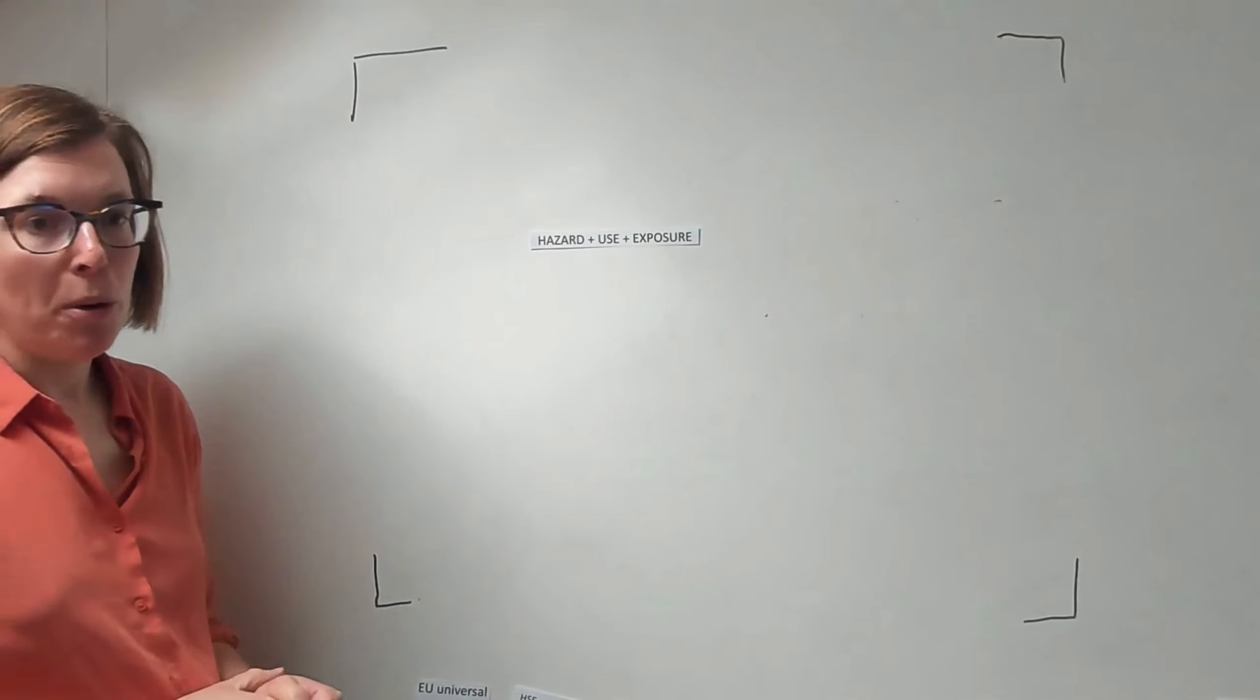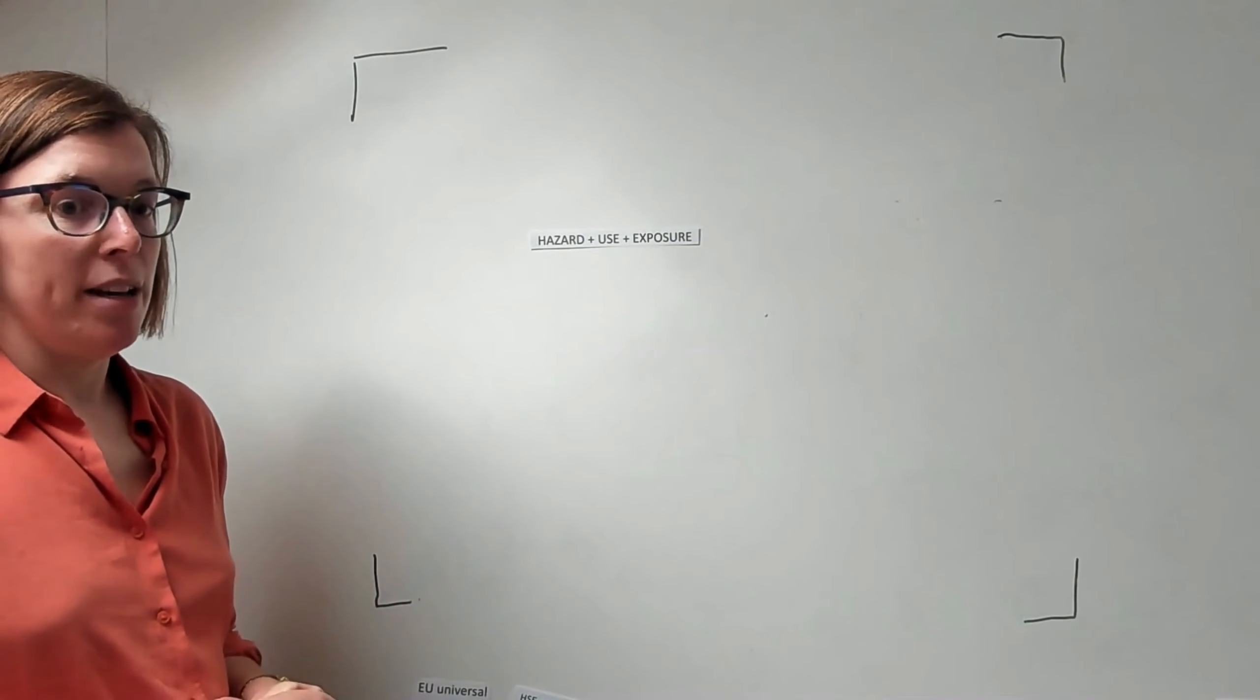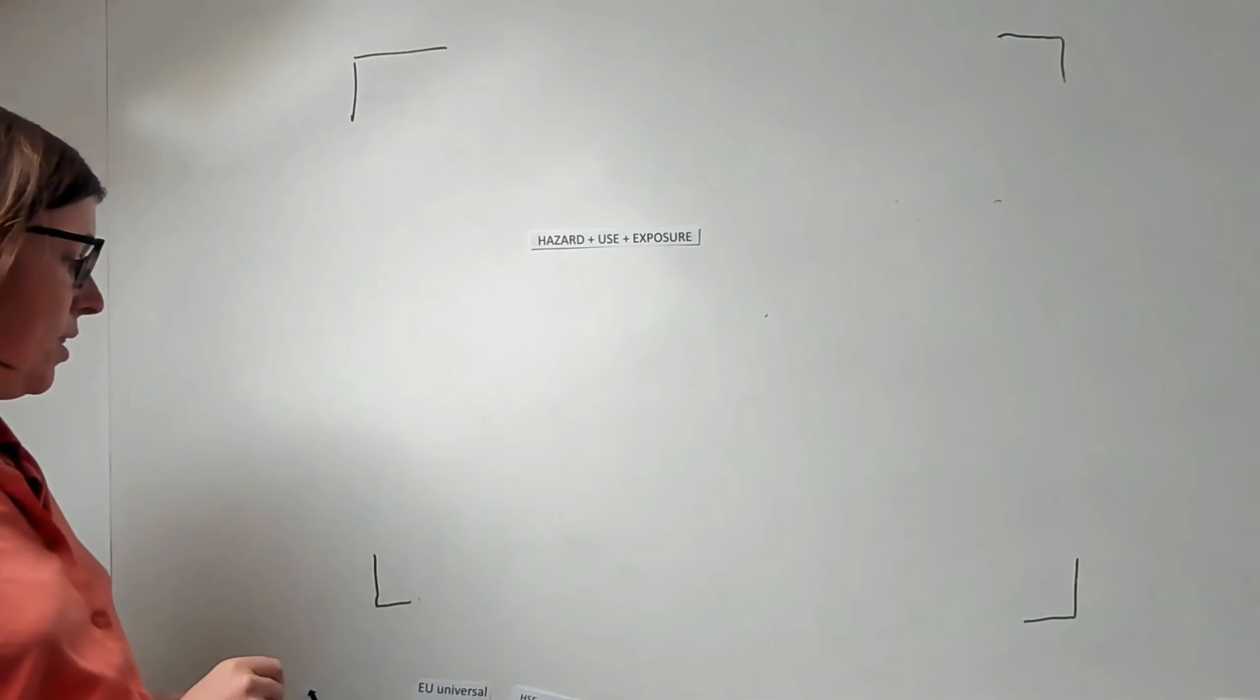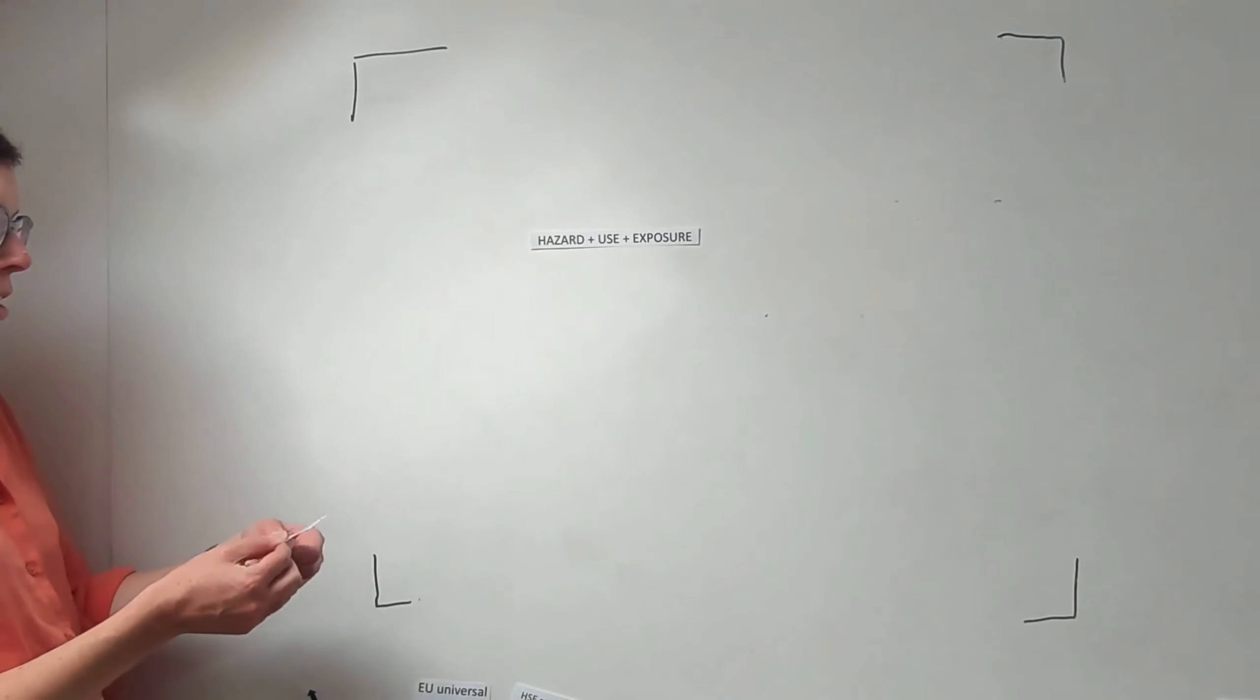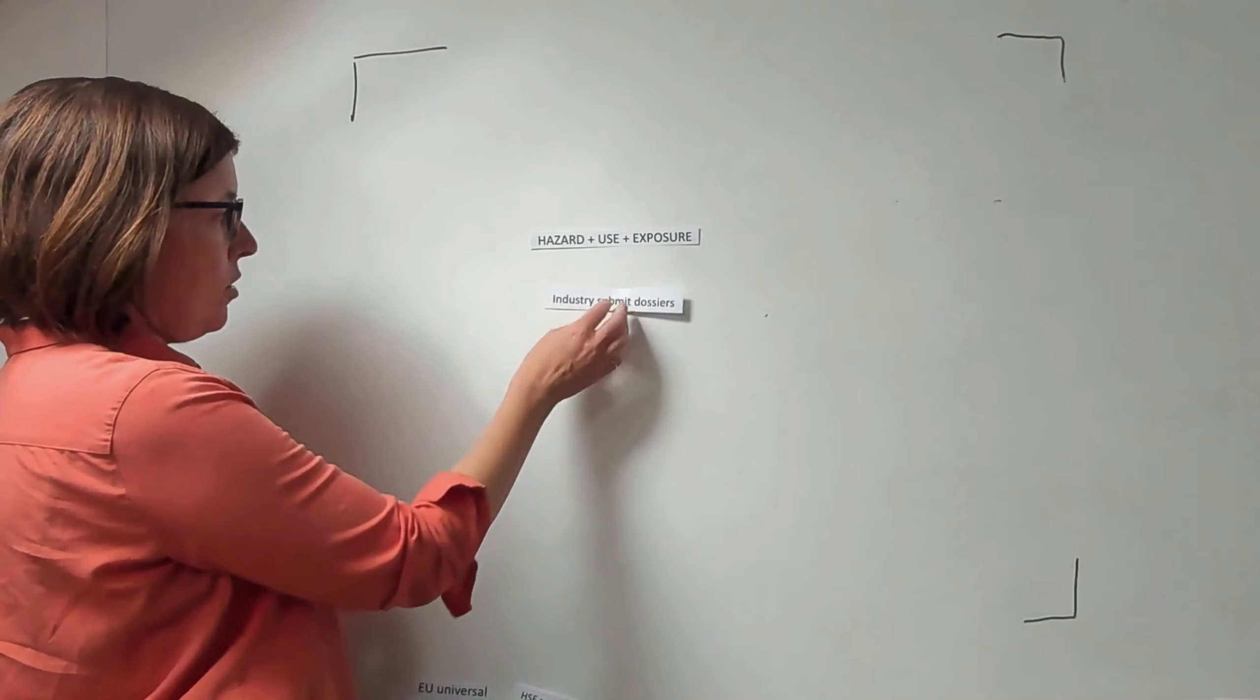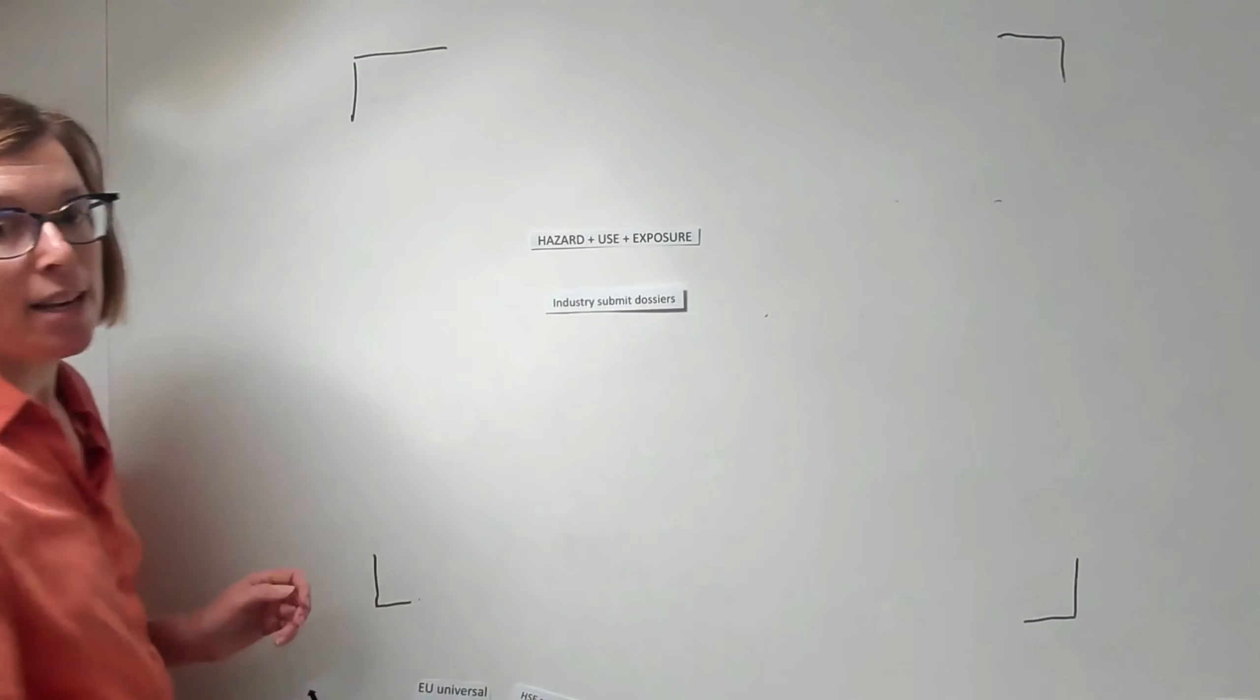UKREACH is the UK regulation that controls the chemicals that can go on to the UK market. If you are a company and you want to get a chemical onto the UK market, you are supposed to supply some data to the regulator, so that is HSE, the Health and Safety Executive, and you're supposed to compile that data into a dossier that you then submit to HSE.